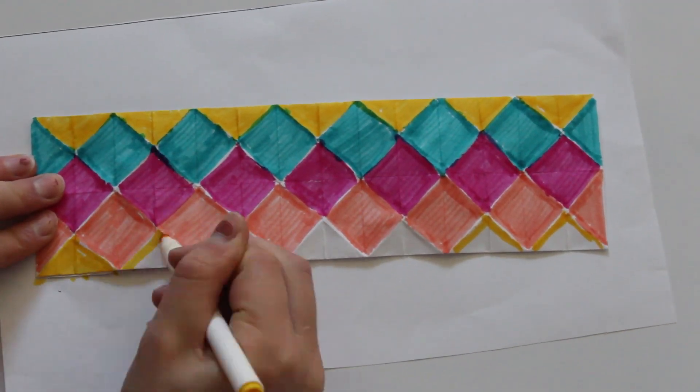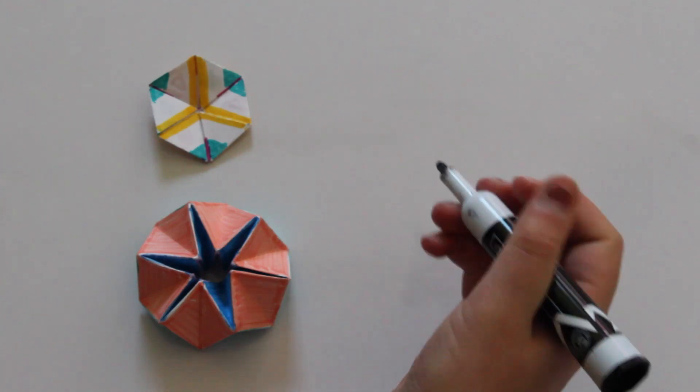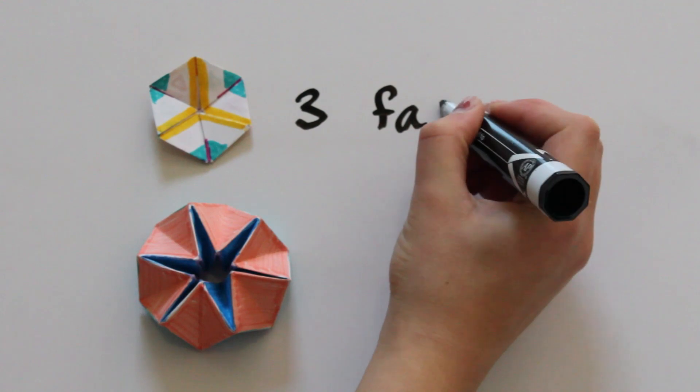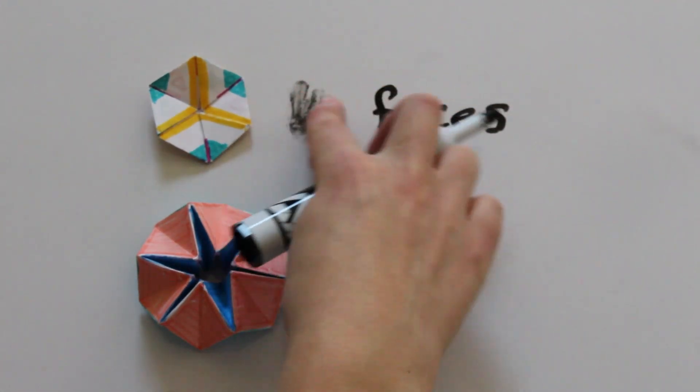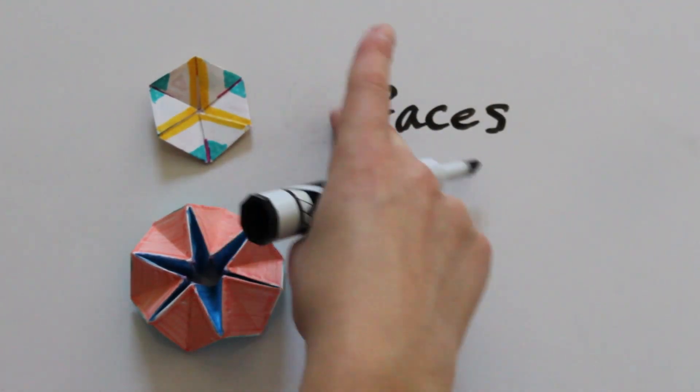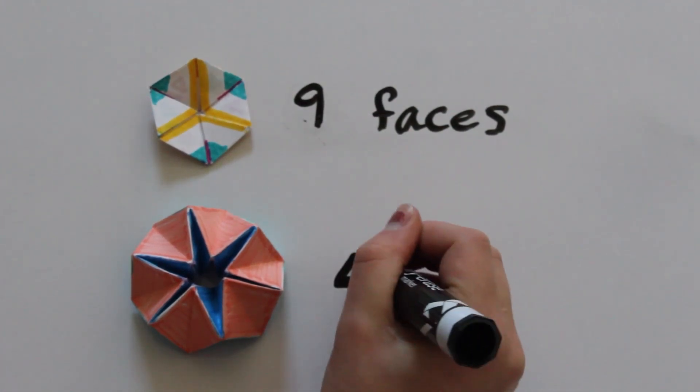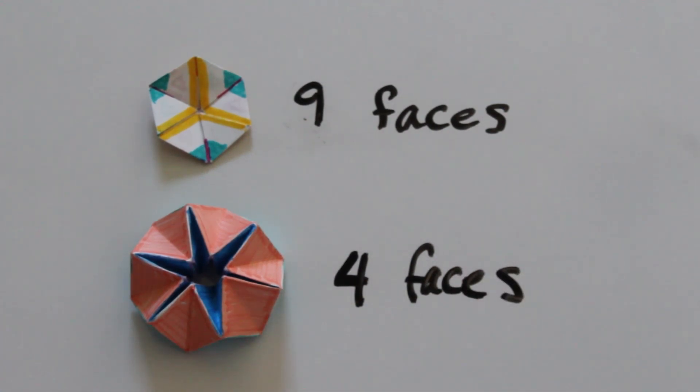One last thing is that I find it interesting that both versions of the hexaflexagons have faces which are a multiple of three. The trihexaflexagon, the simpler version, has three faces, and the hexahexaflexagon, the more complicated one, has nine faces. But our hexahydroflex has four faces, which is kind of weird because it also is a hexagon. My conjecture is that this is because the sides are made up of squares instead of equilateral triangles, but I really have no idea. So let me know if that also interests you or if you have any other theories.